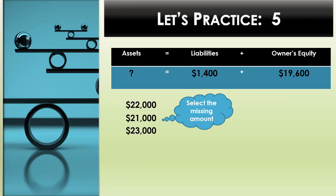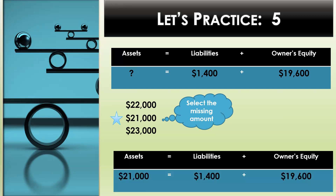Practice number five. Here we need to determine the missing amount for assets. We are given $1,400 for liabilities and $19,600 for owner's equity. When we add together liabilities and owner's equity, we know that that's the missing amount for assets. When we add those two amounts together, we have $21,000. $21,000 will complete this accounting equation and keep it in balance. Each side is now equal to $21,000. Assets equals liabilities plus owner's equity.